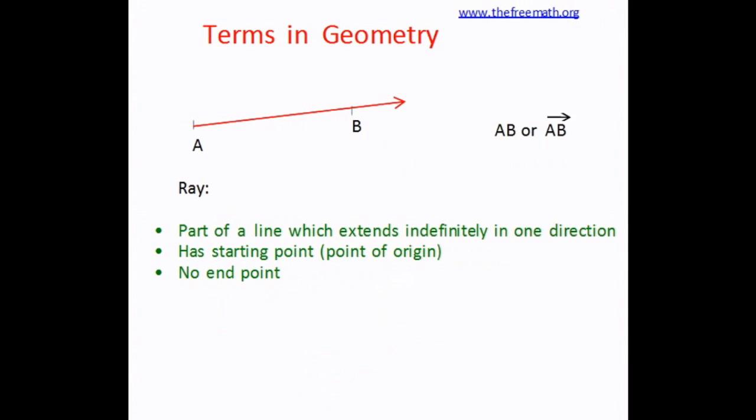Now the next concept is of a ray. Ray is also a part of a line but it extends indefinitely only in one direction. So it has a starting point which is also called the point of origin. Now if you look at the diagram here, the starting point is A and then there is yet another point we have selected on the ray which is point B. So we can use these two points, the point of origin and one more point, to denote or to name a ray.